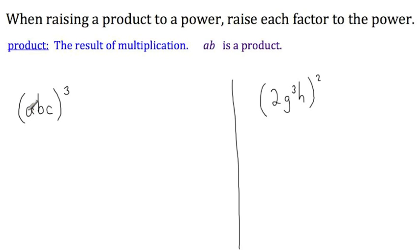The first factor, A, needs to be raised to the power because I'm raising each factor to the power. The power we're raising to is 3, so this is going to be A raised to the power cubed. The next factor is B, I need to raise it to the power, and the last factor is C, and I need to raise it to the power. This gives me A cubed times B cubed times C cubed.